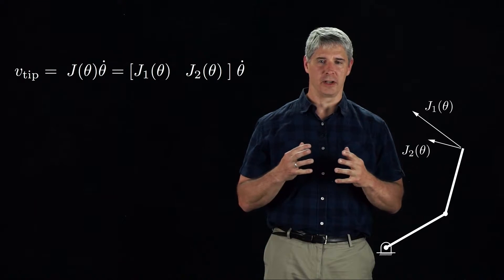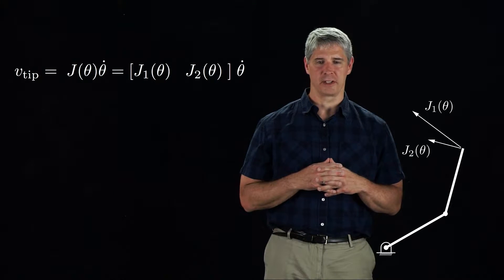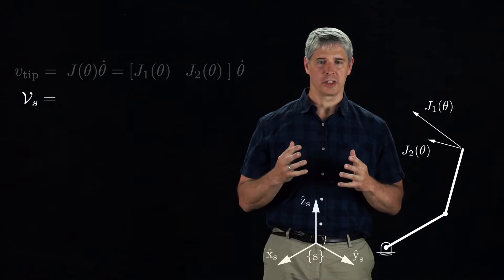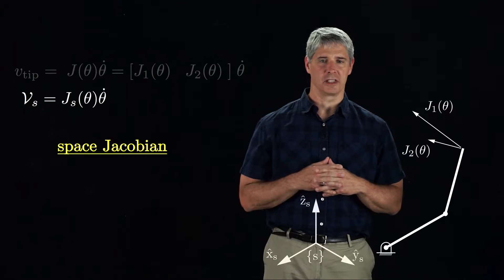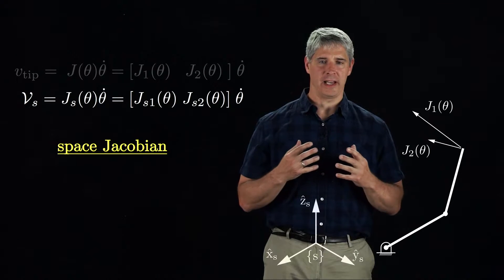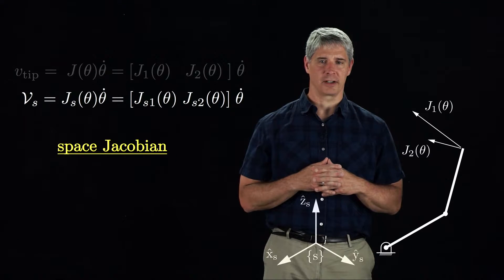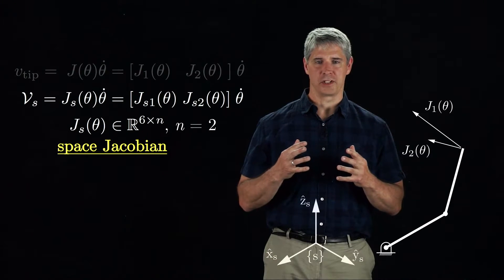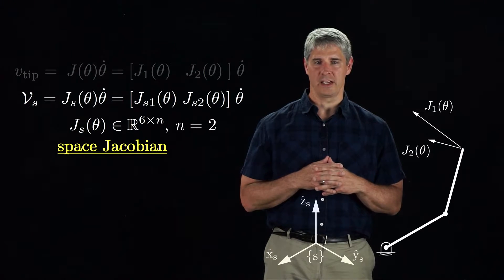In this video, the end effector velocity will be represented by the twist v-s, represented in the space frame S. We call the corresponding Jacobian the space Jacobian Js. It also has two columns, one for each joint. Since v-s is a 6-vector and there are two joints, the space Jacobian is a 6 by 2 matrix. For a general open-chain robot with n joints, the space Jacobian is 6 by n.